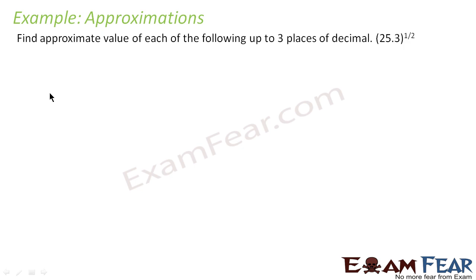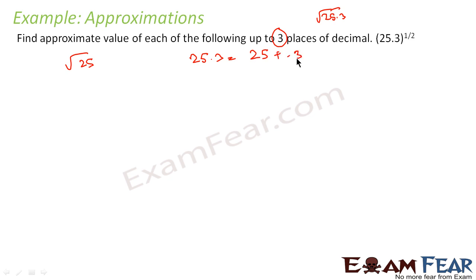Let's take one example: find the approximate value of (25.3)^(1/2) up to 3 decimal places. Finding √25.3 directly is difficult, but √25 is easy. So I write 25.3 = 25 + 0.3, making x = 25 and Δx = 0.3. My function here is y = √x.